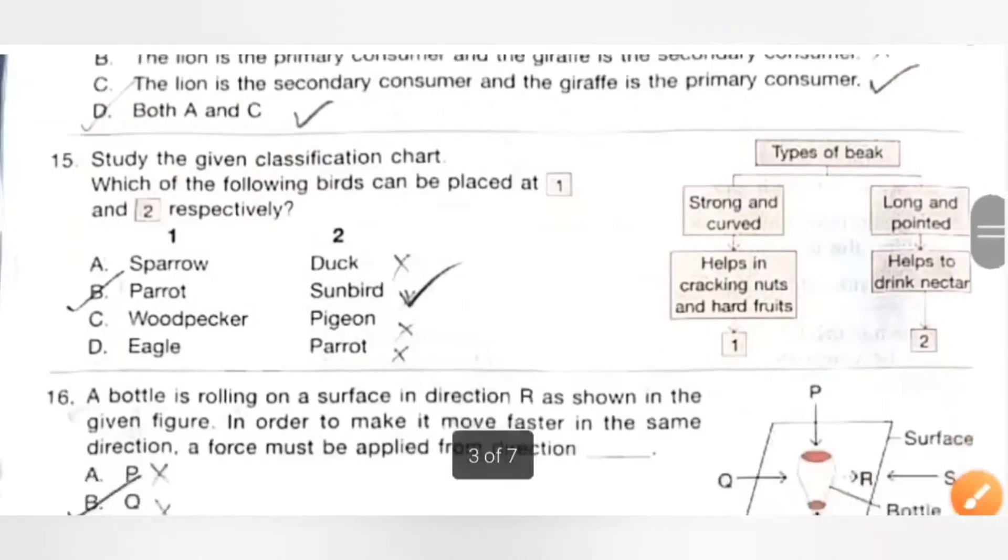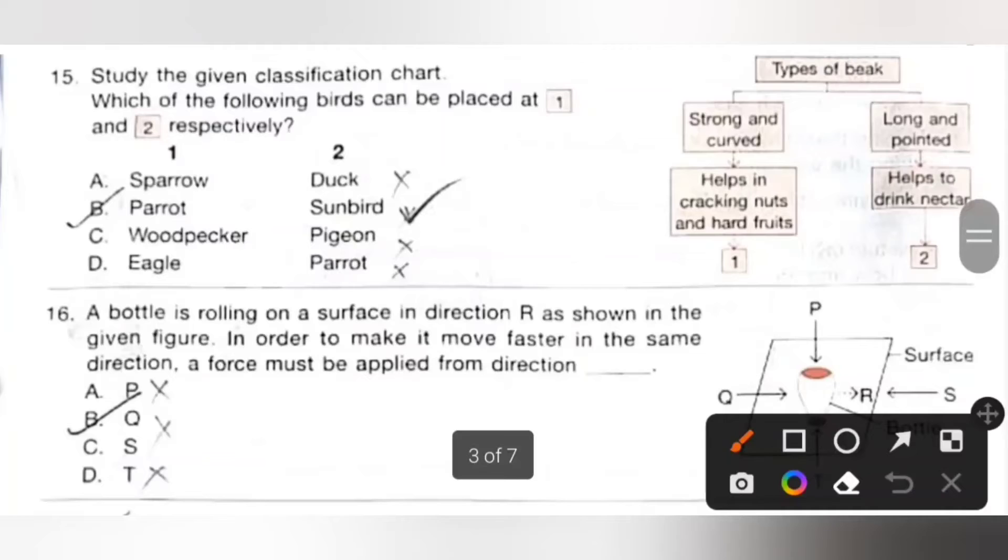Fifteenth one: Study the given flowchart. Which of the following birds can be placed at 1 and 2 respectively? One has strong and curved beak, so it may be parrot. Two is long and pointed beak and helps to drink nectar, so it is a sunbird. So option B is the correct answer.